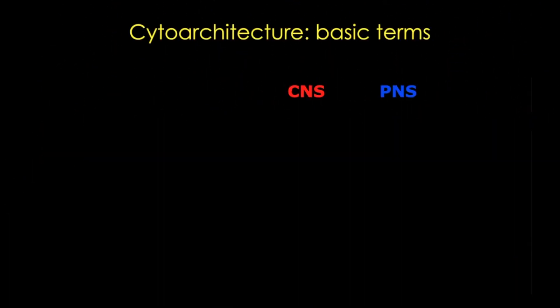During development, neurons migrate to specific areas and then coalesce in groups. In the central nervous system, we call those groups of neurons nuclei, while in the PNS, we call them ganglia. Groups of neurons in the enteric nervous system are also called plexi. There are exceptions, most notably the basal ganglia of the CNS.